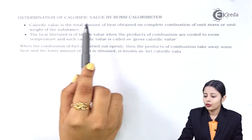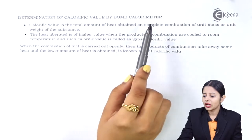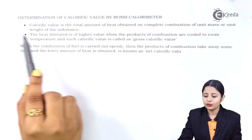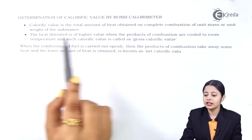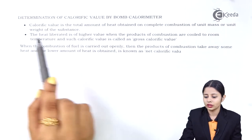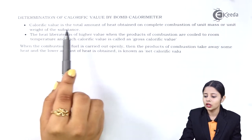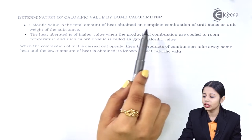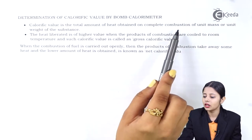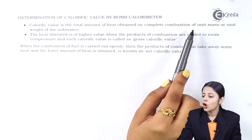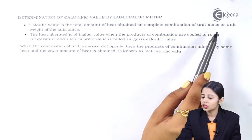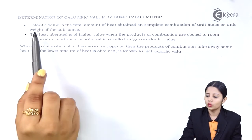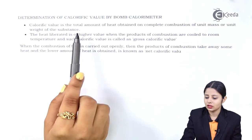Determination of calorific value by bomb calorimeter. Calorific value is the total amount of heat obtained on complete combustion of unit mass or unit weight of a substance.